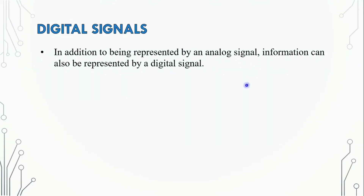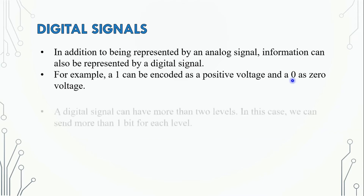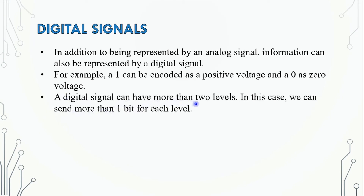We will talk about the analog signals which represent digital signals. For example, a 1 can be encoded as a positive voltage and a 0 as a zero voltage. Or, you can represent a positive voltage and zero voltage. You can see that the data is expressed as 0-bit and 1-bit.